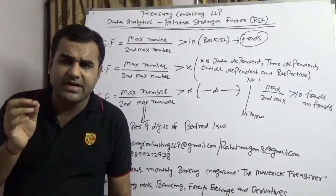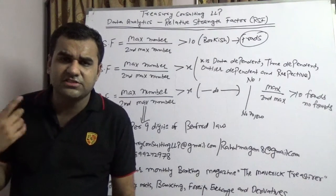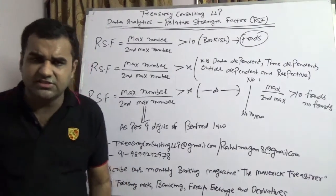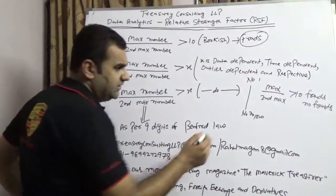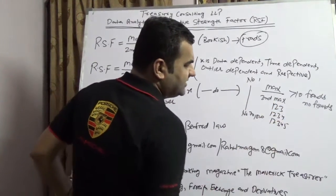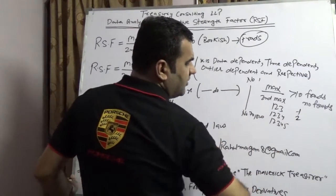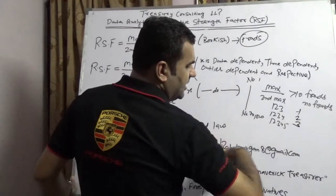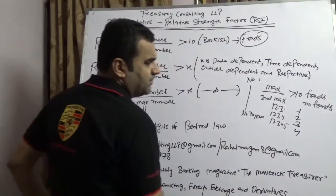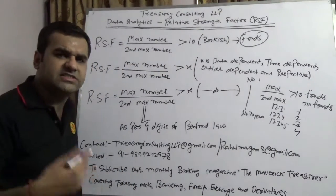So Benford is nothing but it will take the first digit, it will take the second digit, it will take the third digit. Take an example: I'm writing few numbers here. I will say 1-2-3, 1-2-3-4, 1-2-3-4-5. What is the first digit? One. What is the second digit? Two. What is the third digit? Three. What is the fourth digit here? It's four, and so on and so forth.